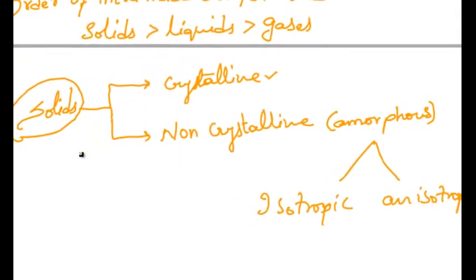Solids in which the arrangement of atoms in the unit cell are in a uniform manner are known as crystalline solids, whereas solids in which the arrangement of atoms in the unit cell is in a non-uniform manner are known as non-crystalline or amorphous solids. The amorphous solids are again classified into two types: isotropic solids and anisotropic solids.